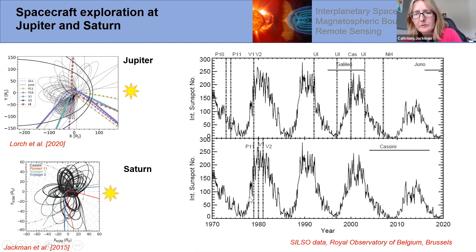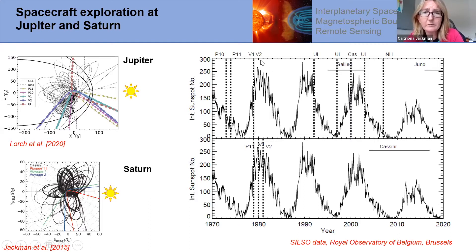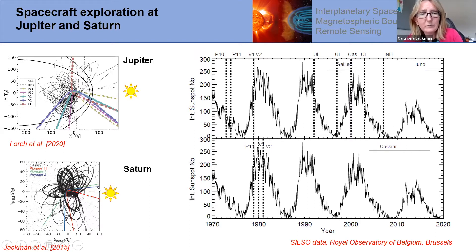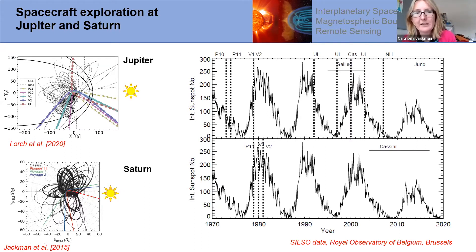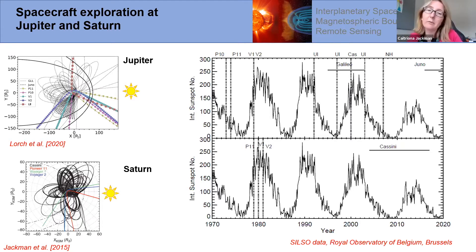The spacecraft that have orbited are Galileo and Juno. The same is shown for Saturn — trajectories of visiting spacecraft, with Cassini in black and Pioneer and Voyager in other colors. The key message is that we have coverage at Jupiter and Saturn at all phases of the solar cycle. We have the ability to study not only different seasons due to long mission durations, but also solar minimum and maximum and all the variable parameter space that brings in terms of solar wind-magnetosphere-ionosphere coupling.